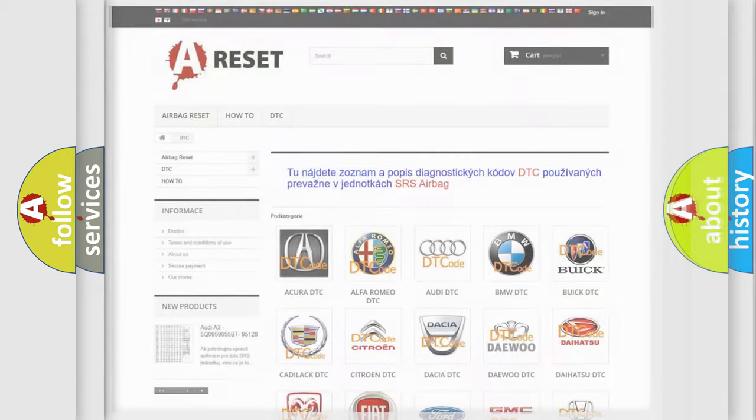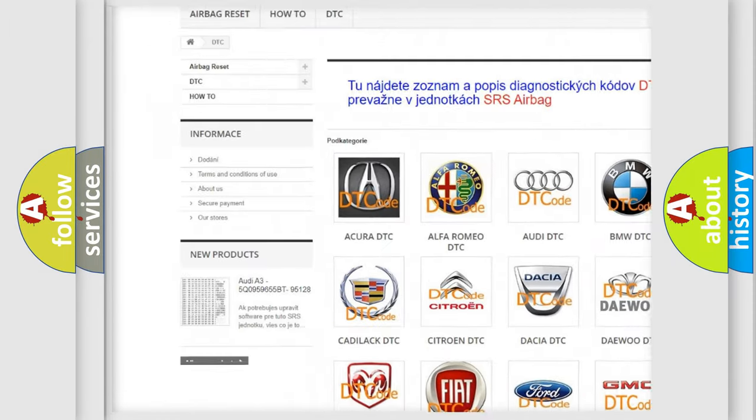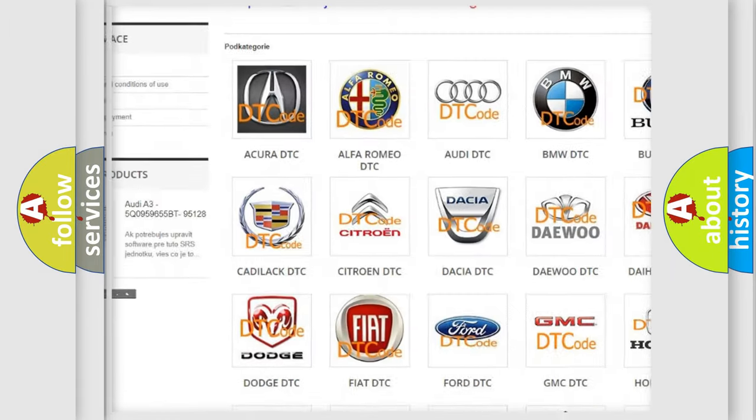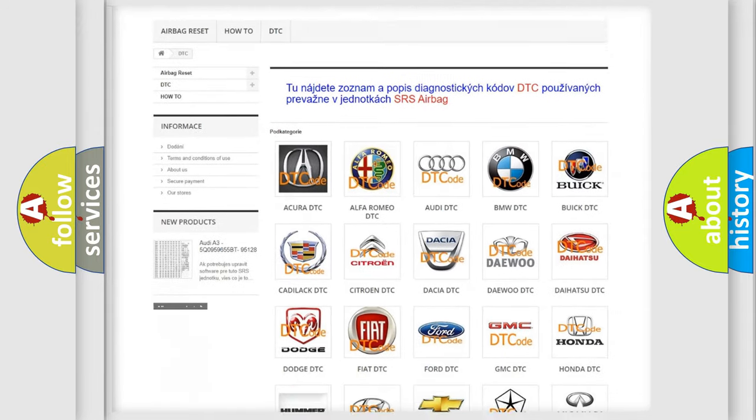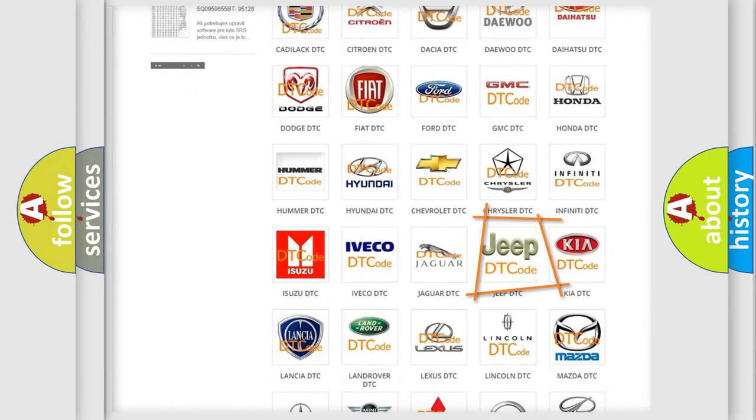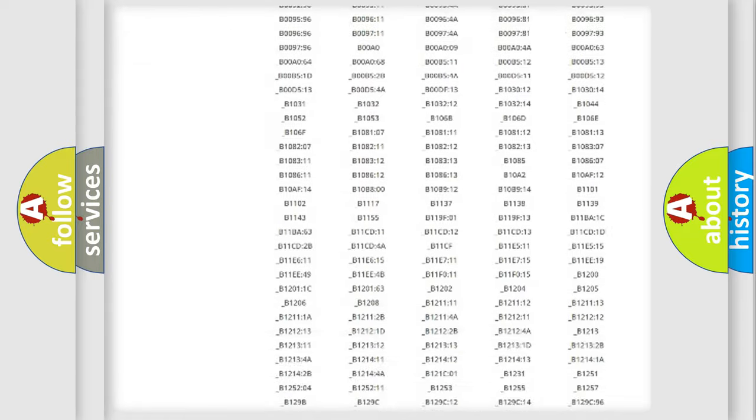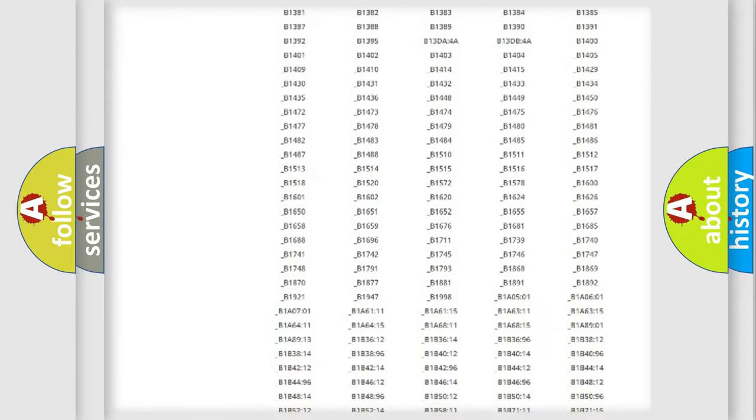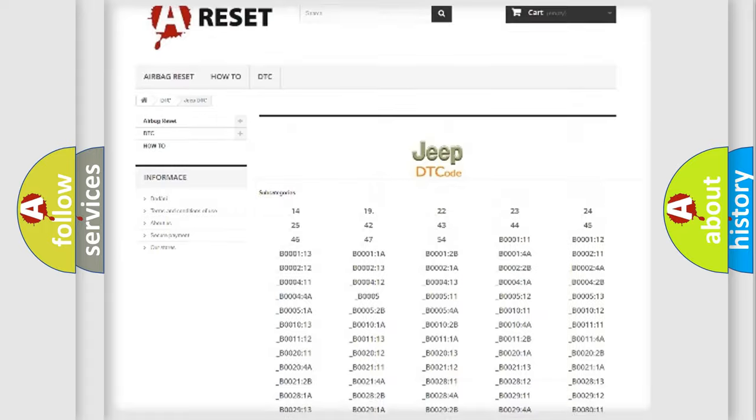Our website airbagreset.sk produces useful videos for you. You do not have to go through the OBD2 protocol anymore to know how to troubleshoot any car breakdown. You will find all the diagnostic codes that can be diagnosed in Jeep vehicles.